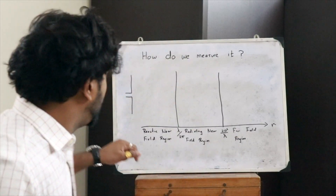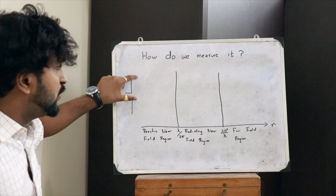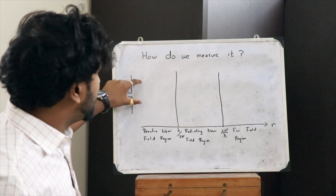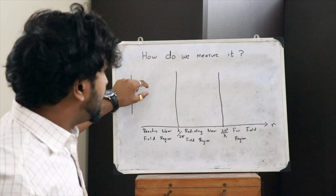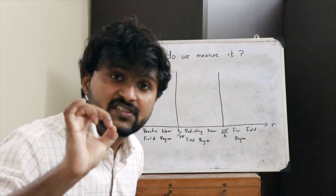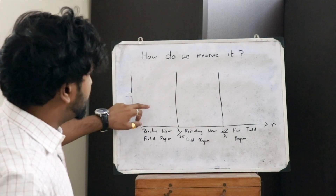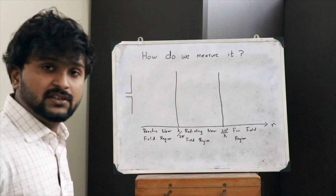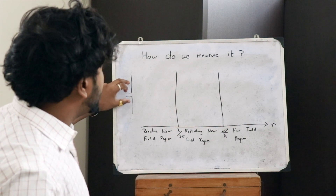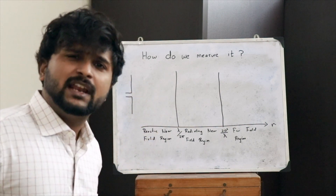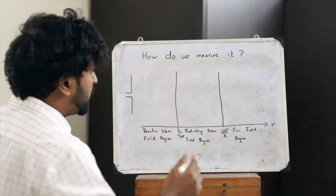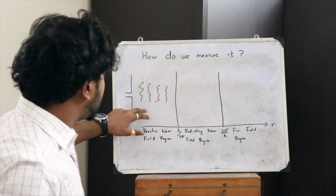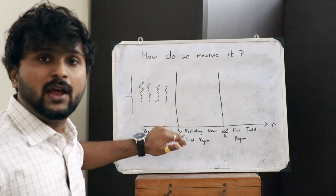Now let us assume this dipole antenna produces a certain radiation. When we measure the radiation at a constant distance r in the reactive near field region, the radiation pattern obtained does not have any definitive features — it does not tell us what the actual radiation produced by the antenna is.